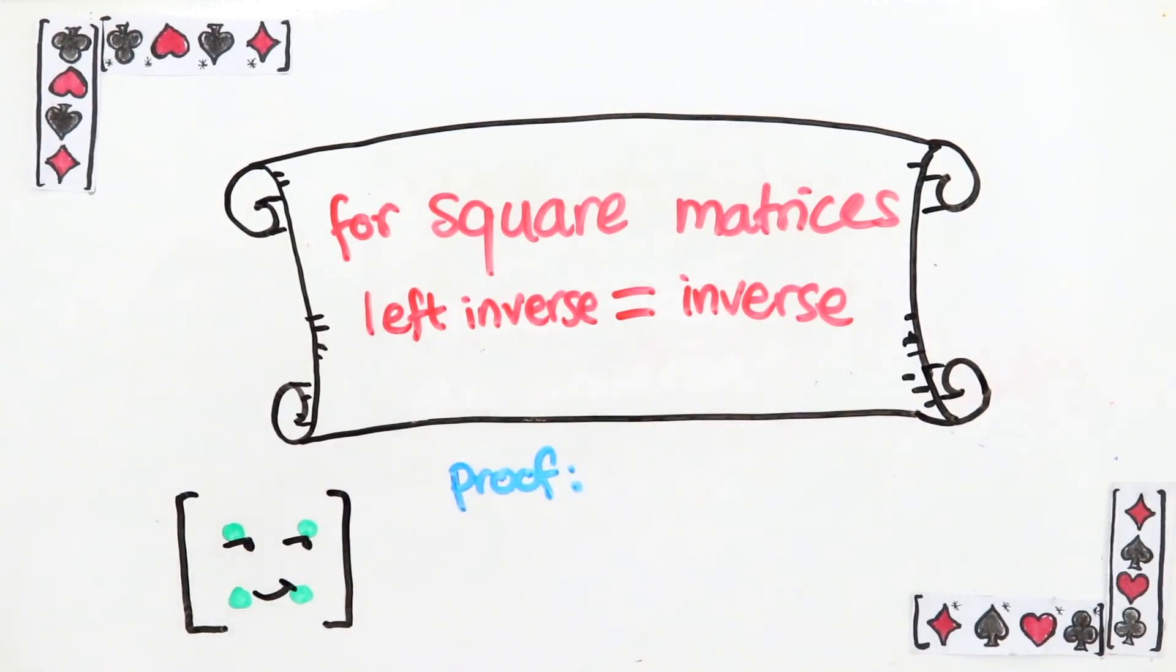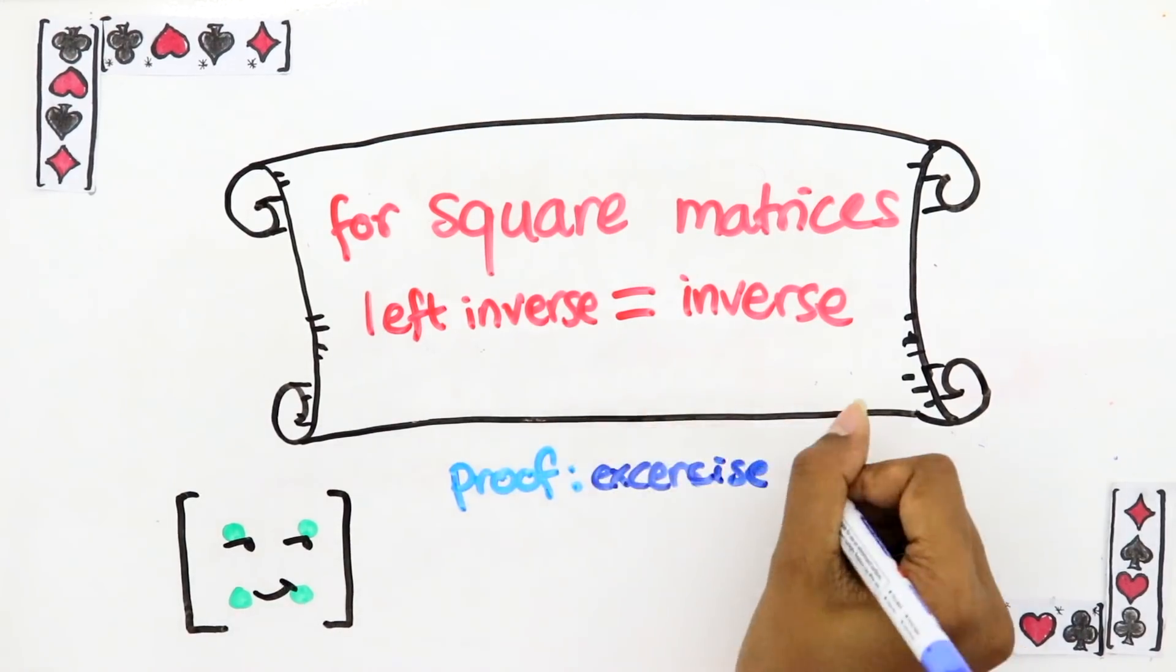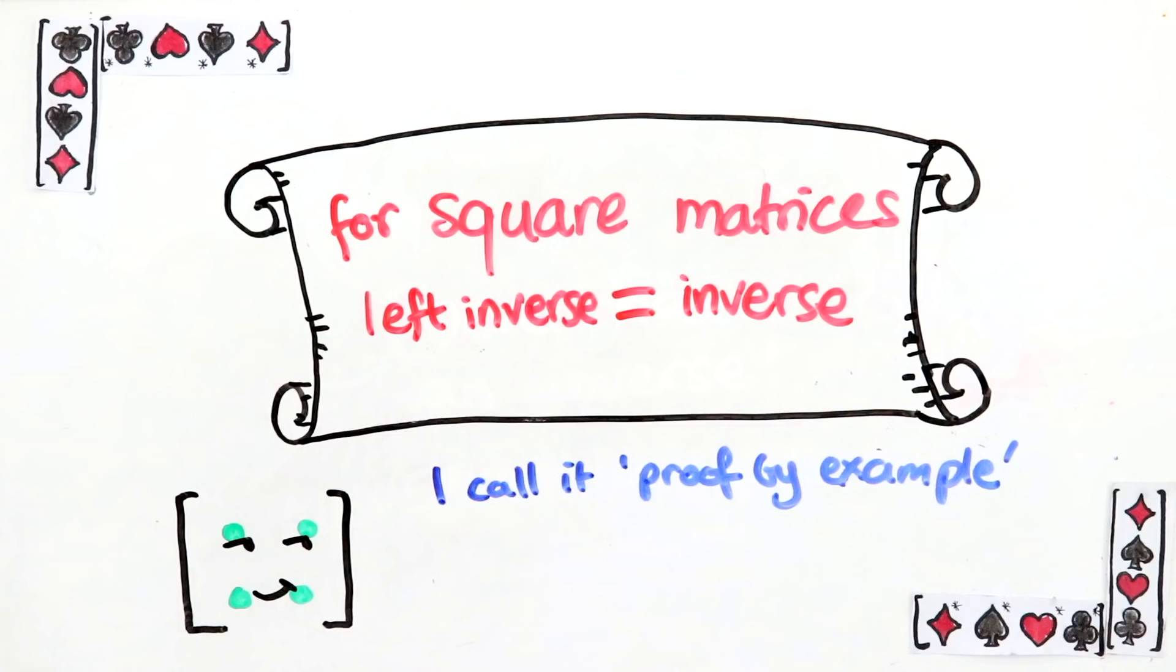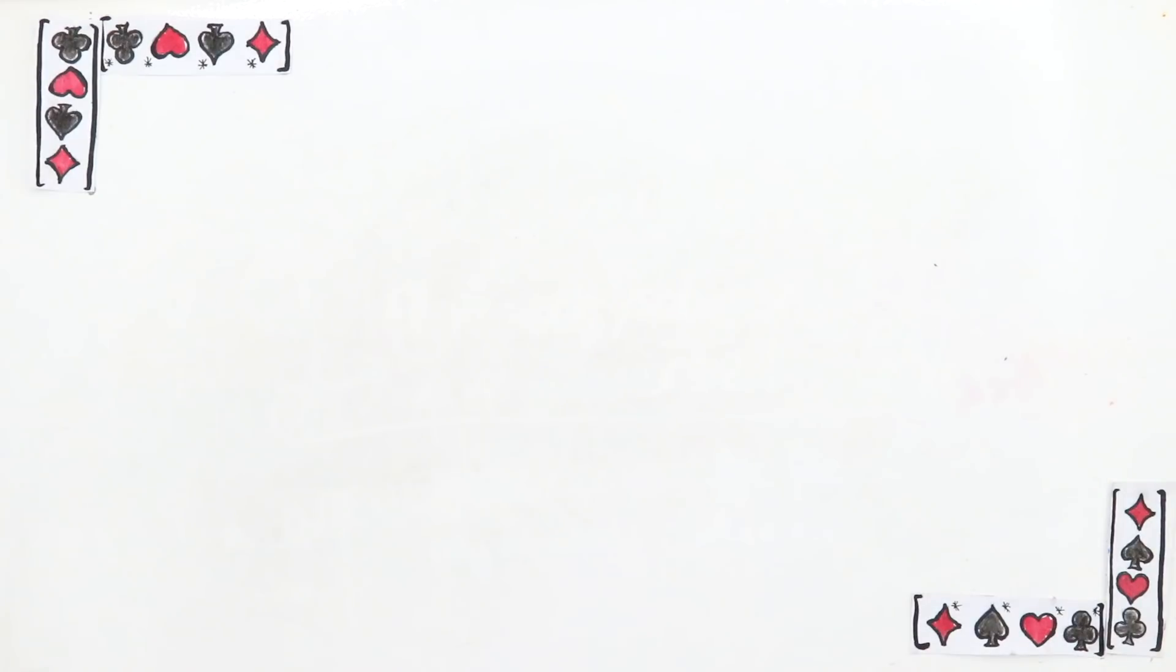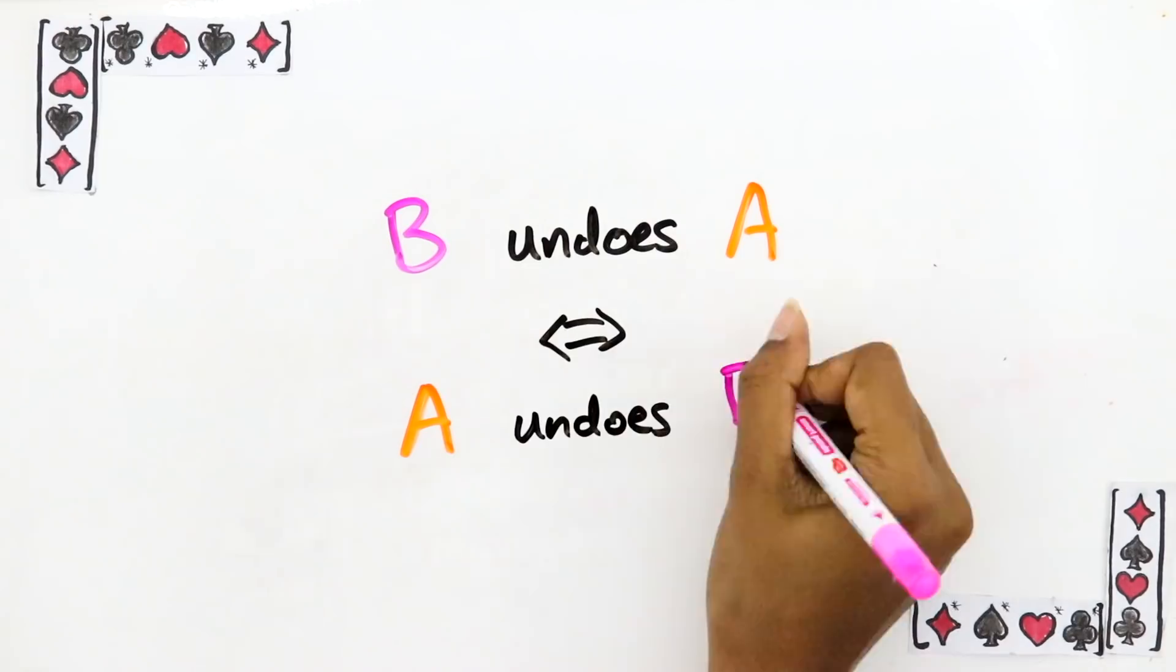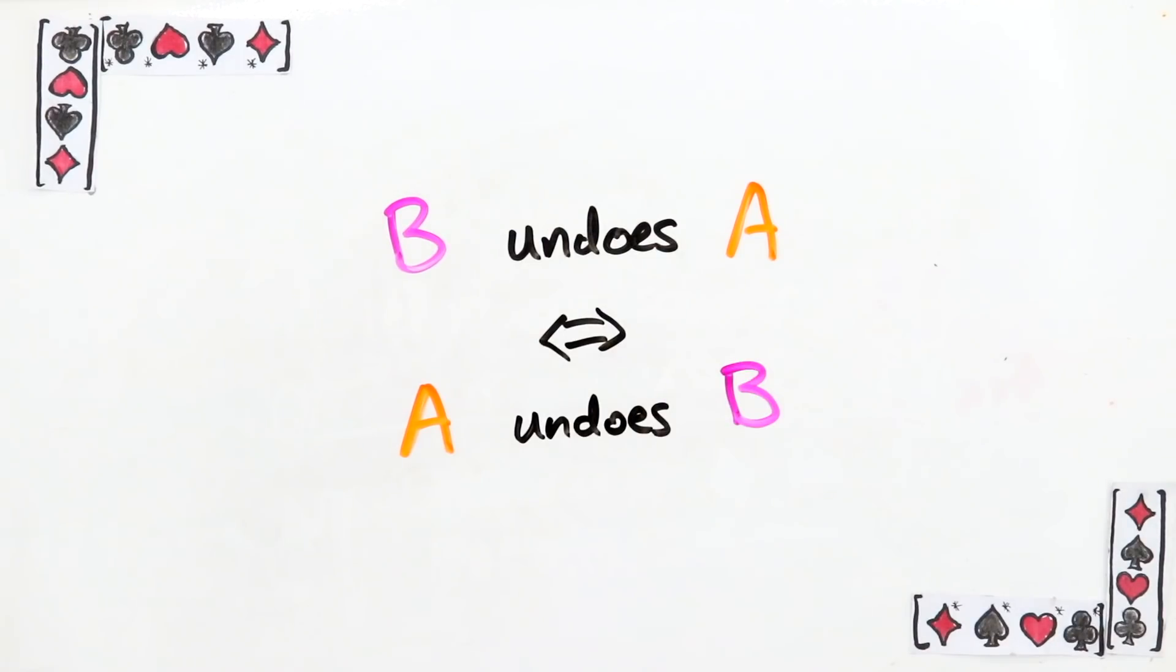I'm not going to prove this fact. You are. For homework. But I will give you an illustrative example in a little to help you understand why it's true. Once you've proved it, you'll see that for a square matrix A, if B undoes A, then A undoes B as well. This gives us an easy criteria for checking whether A has an inverse or not, because it's the same criteria we use to check whether A has a left inverse.